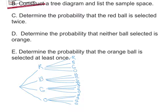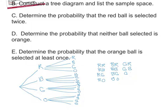The sample space has 16 items. Going down each branch: red-red, red-blue, red-green, red-orange; blue-red, blue-blue, blue-green, blue-orange; green-red, green-blue, green-green, green-orange; orange-red, orange-blue, orange-green, orange-orange. That's your complete sample space with 16 items.